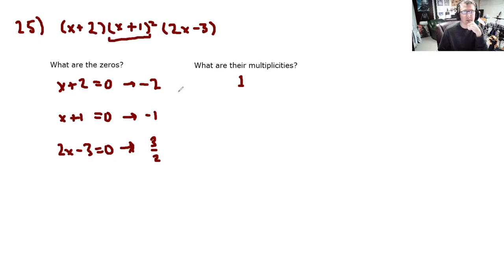x plus 1. That's the factor corresponding to the zero of negative 1. Well, it's raised to the power of 2. So, its multiplicity is 2. The factor corresponding to the last zero of 3 halves is the factor 2x minus 3. It has power 1. So, it has multiplicity 1.